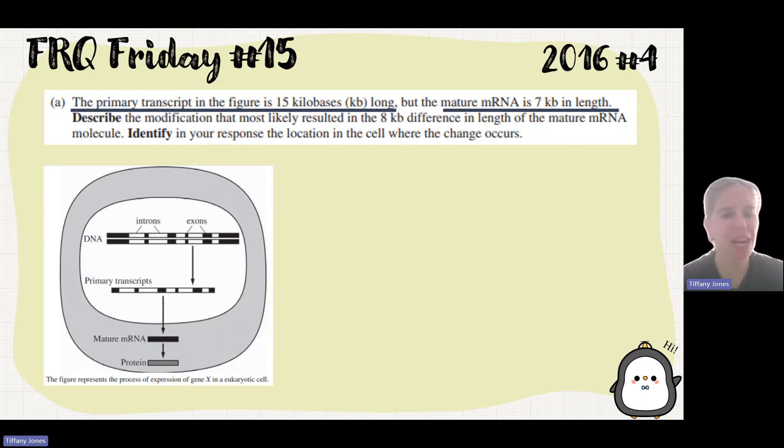So they've given us this diagram and they've told us some information. I'd go ahead and label your diagram. We know that before, the primary transcript is 15, and then after, the mature mRNA is 7 kilobases.